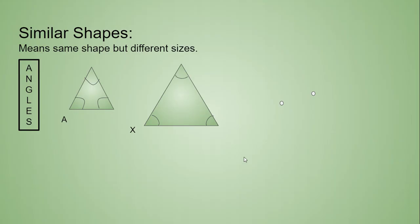For our angles, no matter what size the similar shapes are, your angles are always going to equal each other. So if angle A is 60 degrees, then angle X is also 60 degrees.